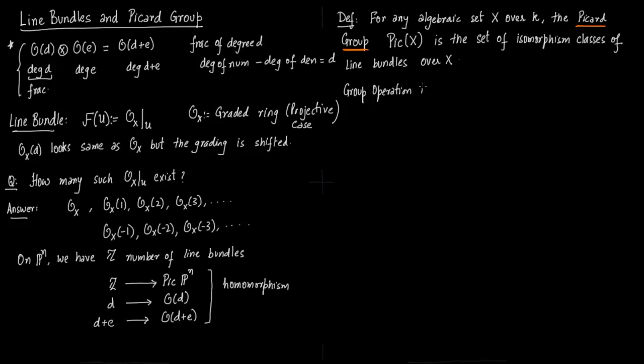What is the group operation? You just take the tensor product of two line bundles, just like we have taken tensor product of O(D) and O(E) to form O(D+E). Group operation is L tensor M, zero element is OX because L is an OX module. The inverse is L star where L star is nothing but the dual map.